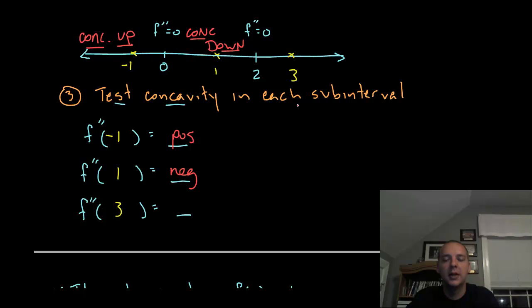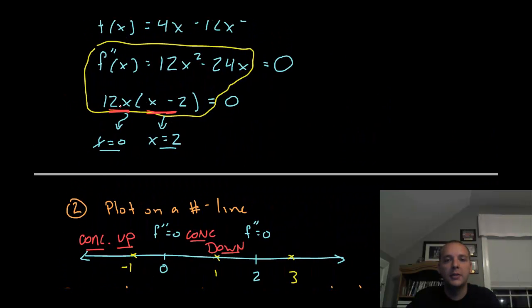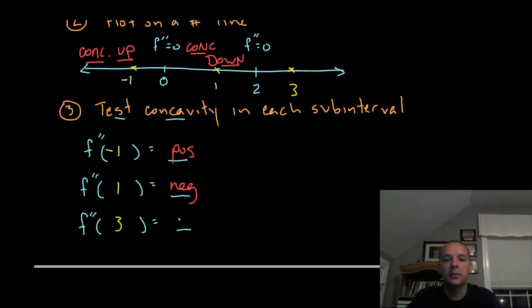If we try x = 3: positive times positive (3), times positive (3 - 2 = 1). That will give you a positive. And this will be concave up again.